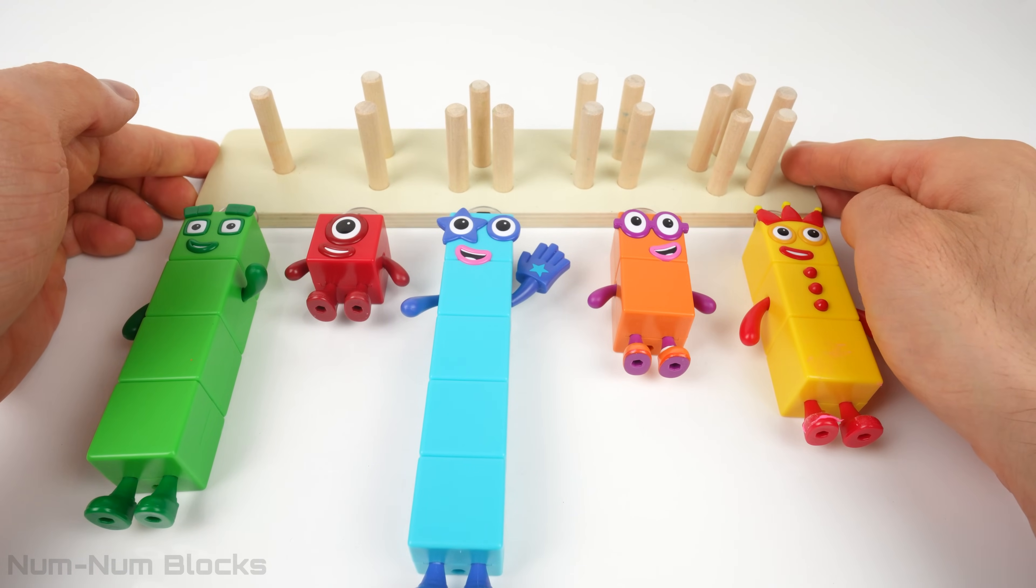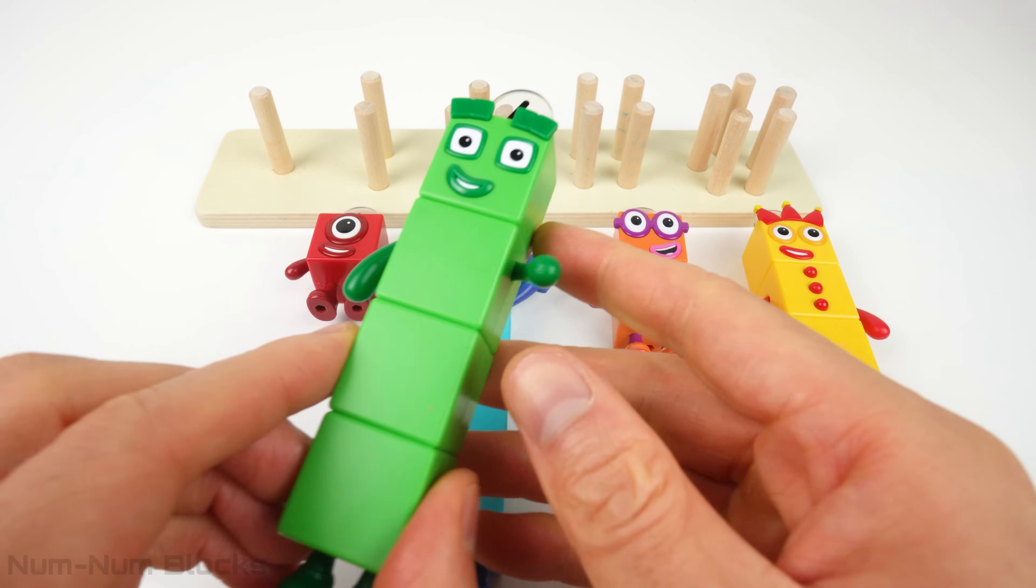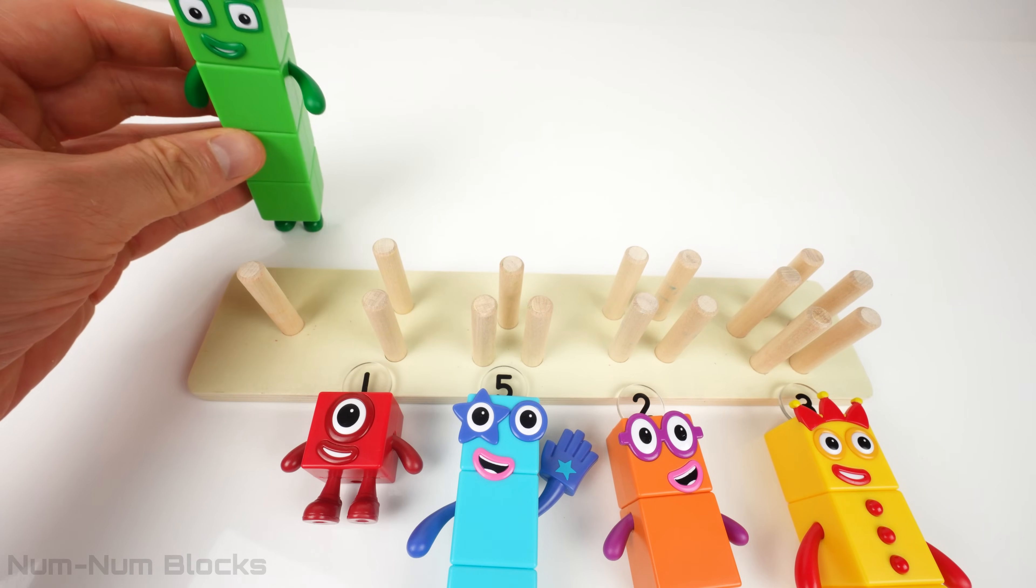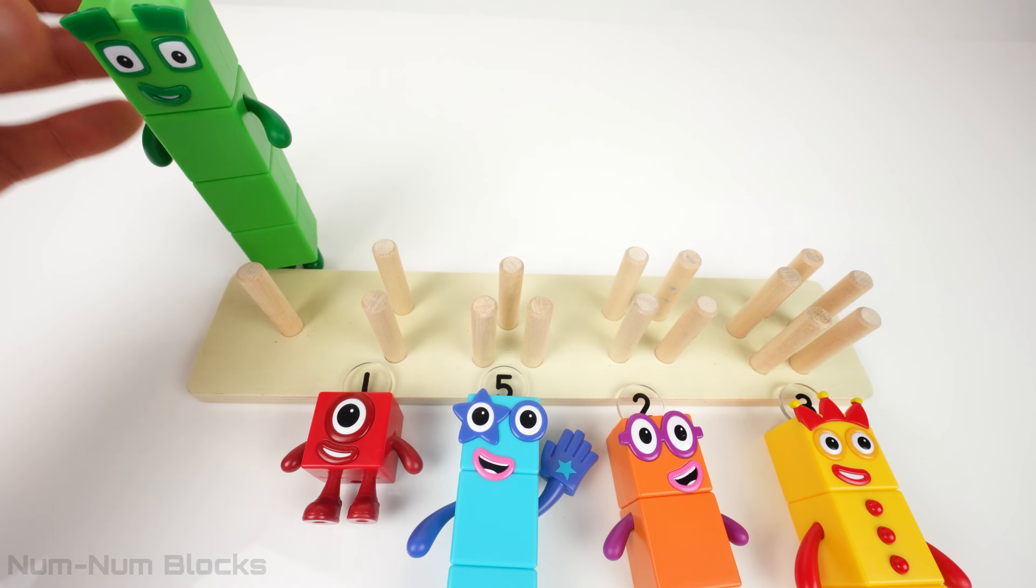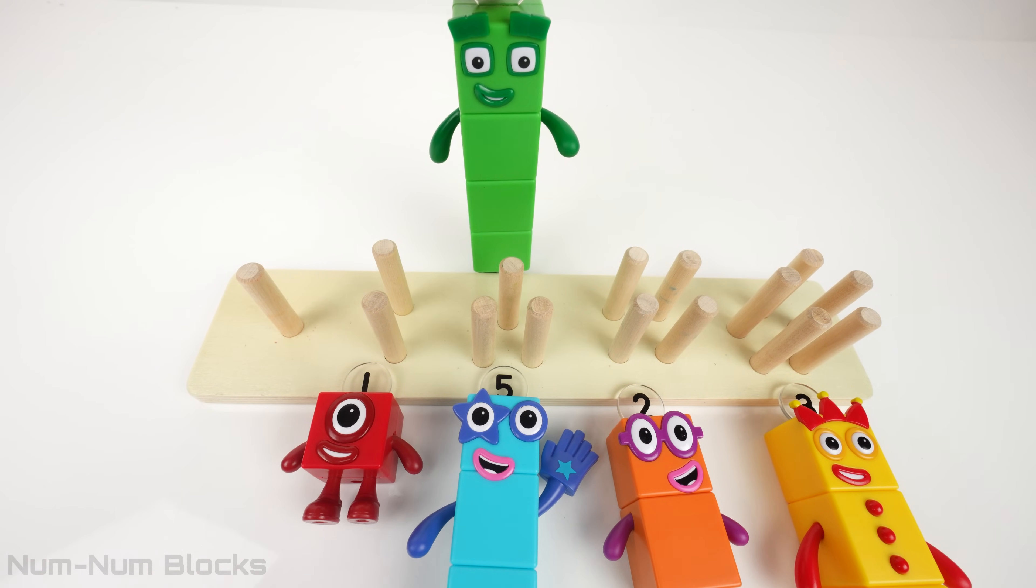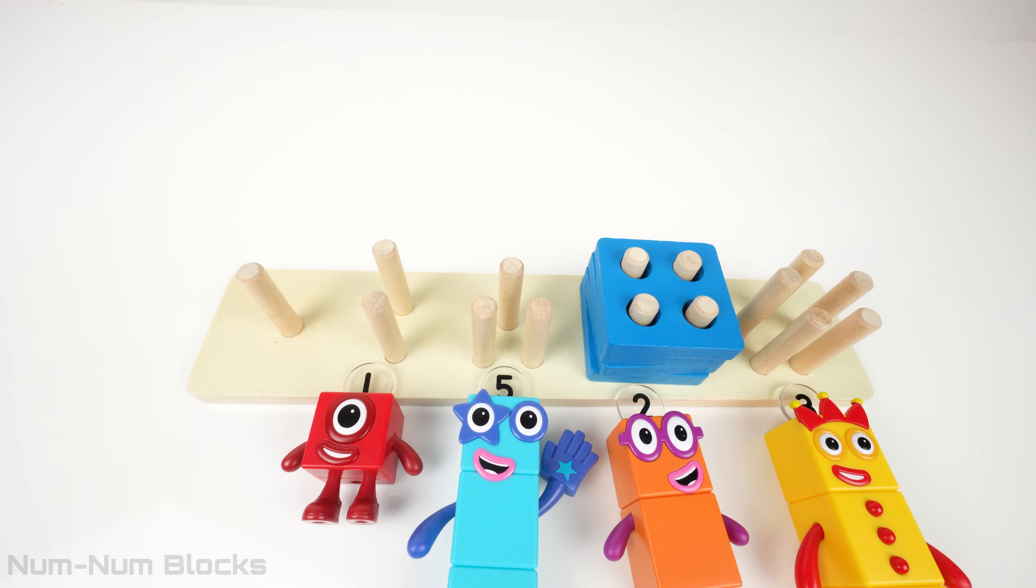I think we need to match the number blocks with the right place on the puzzle. Let's start with four. Hello! Fortunate to see you today! Where do we put number four? Uh-oh! Four matches with the group with four pegs. Wow! Four just transformed into the missing pieces.